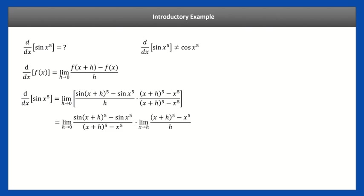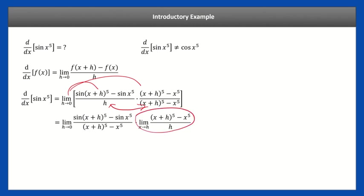Essentially we're going to swap h and that denominator. By doing that, we get two different limits — we distribute the limit to the first fraction and the second fraction. This limit here is the derivative — specifically the limit definition of the derivative of x to the fifth power. So we're going to rewrite that as the derivative of x to the fifth power.